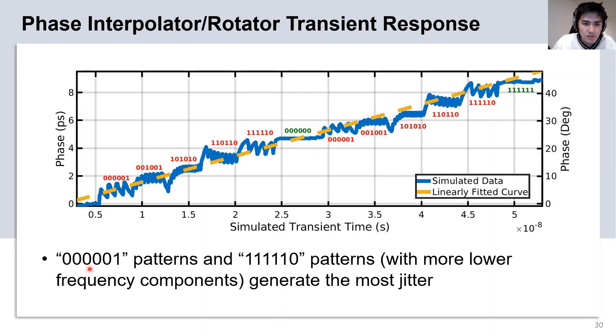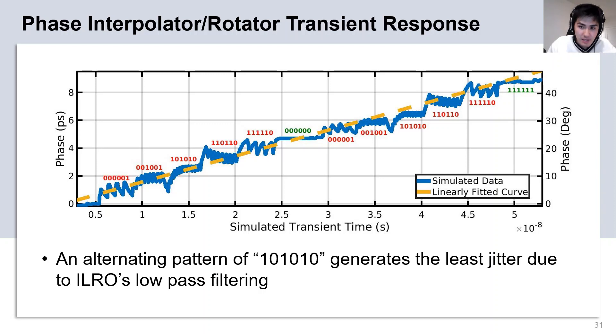The 000001 patterns and the 111110 patterns generate the most jitter, as they contain the most low-frequency components, which would be filtered out by the ILO's low-pass transfer characteristics. On the other hand, an alternating pattern of 101010 generates the least amount of jitter, as they contain more high-frequency components, which would be filtered out by the ILO itself.